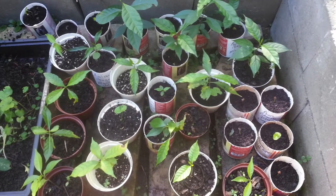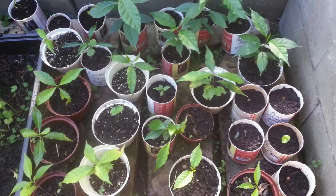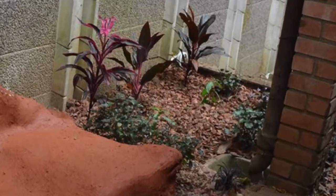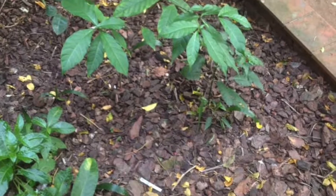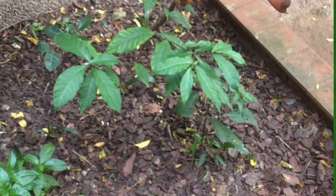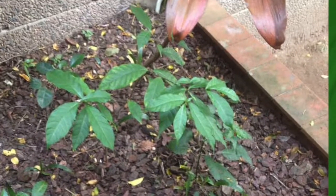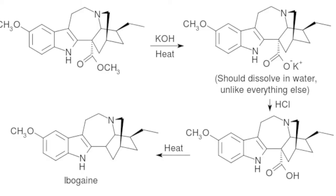I was able to grow iboga in Durban, South Africa, thanks to the mild coastal weather. Three years later, there is still a plant that has grown to about 70 centimeters. That is small for three years' growth, but it was placed by a house and neglected — and it is surviving the winters.